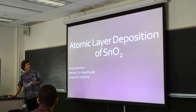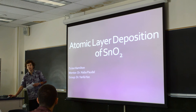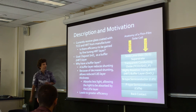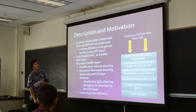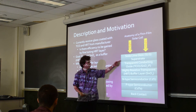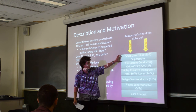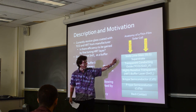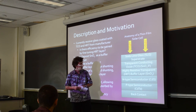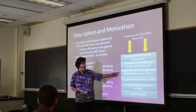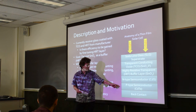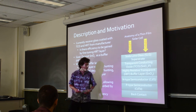I've been working on the atomic layer deposition of tin oxide. Over here on our right we have our classic anatomy of a thin film solar cell. We have our glass superstrate if we're growing it from the top, our transparent conducting oxide that serves as a front contact, our highly resistant transparent buffer layer, our N-type semiconductor, our P-type semiconductor, and then our back contact.